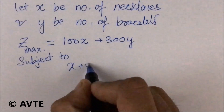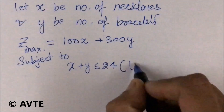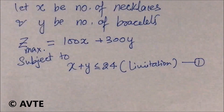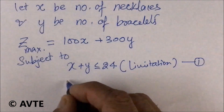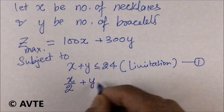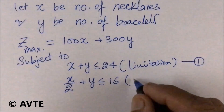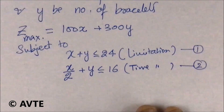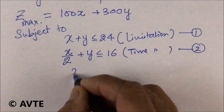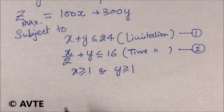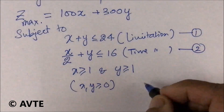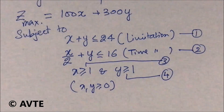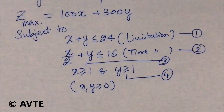The first constraint is X + Y ≤ 24, because this is the total capacity limitation. Then the time constraint: maximum 16 hours are available, and it takes half an hour for a necklace and one hour for a bracelet, giving (1/2)X + Y ≤ 16. Along with the non-negative constraints, we also have X ≥ 1 and Y ≥ 1, since at least one of each must be produced.